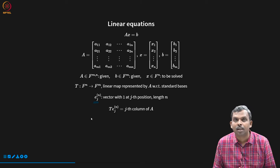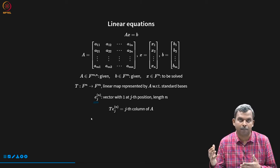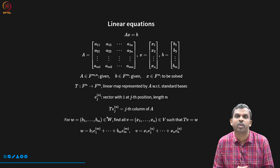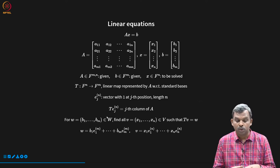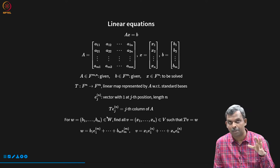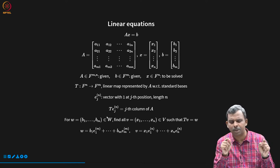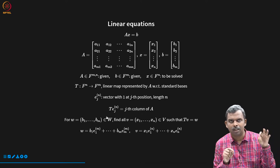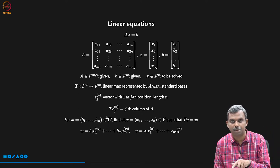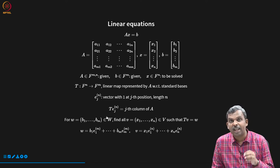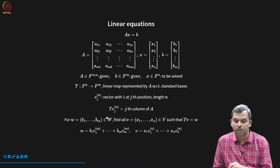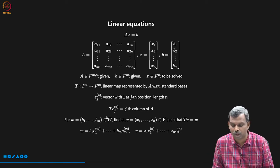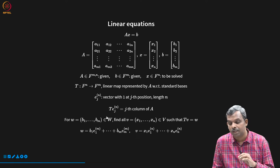There is this linear map T which is associated with the matrix A. In terms of the linear map, we are asking a specific question when you solve a linear equation. Given a W which belongs to the vector space W — nothing but your coordinate vector b_1, b_2 to b_m, picking the standard basis for W also — you have to find all V whose coordinates are x_1 through x_n, such that T times V equals W.